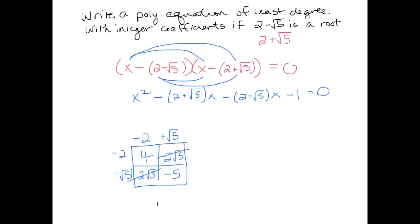So the only thing we need to worry about is the linear term. So let's see what happens here. This is going to turn into x squared minus 2x minus root 5x. This is going to get minus 2x plus root 5x minus 1 equals 0. Excellent. We have a positive root 5x and a negative root 5x. They cancel.